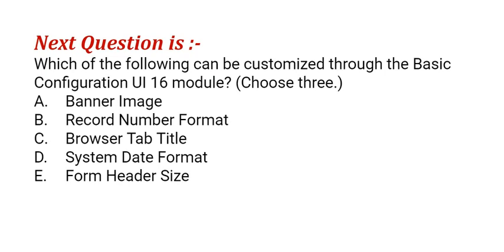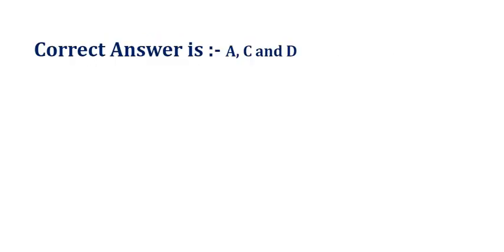Our next question is: which of the following can be customized through a basic configuration UI-16 module? Choose 3. The options are: option A, banner image; option B, record number format; option C, browser tab title; option D, system date format; option E, form header size. The correct answers are option A, C and D.